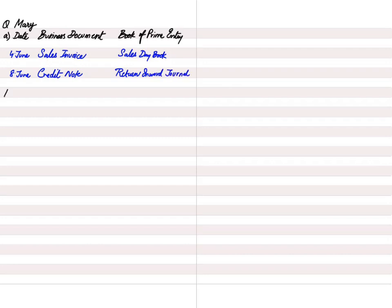In part B, the question asks for the name of the document Mary received on 30th June. At the end of the month, we as suppliers send our customers a statement of account. A statement of account is basically a reminder and summary of all transactions that have taken place with the customer during the month, reminding them to pay the amount they owe.